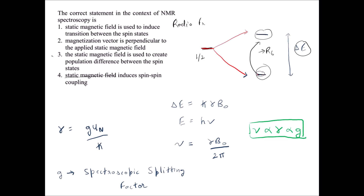The correct answer is option three: static magnetic field is used to create a population difference between the spin states. Once the energy gap increases, more atoms will be in the lower energy ground state and fewer in the higher energy excited state. If we apply a stronger magnetic field, the gap increases further and the population difference also increases further.